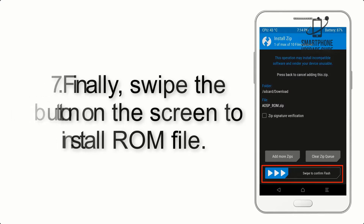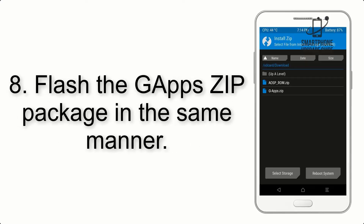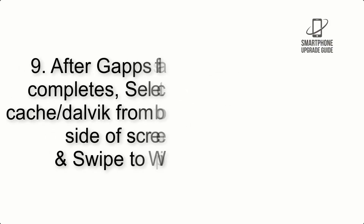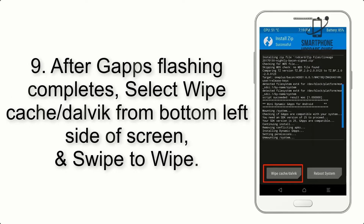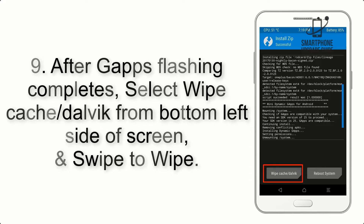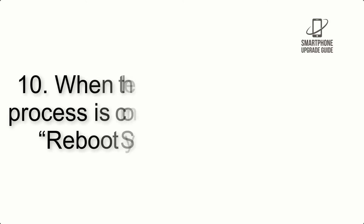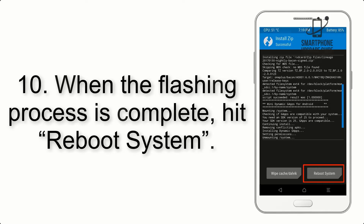Step 7: Swipe the button on the screen to install the ROM file. Step 8: Flash the GApps zip package in the same manner. Step 9: After GApps flashing completes, select wipe cache and dalvik from the bottom left side of the screen and swipe to wipe.